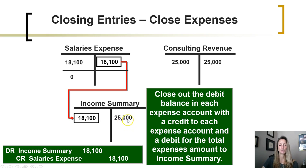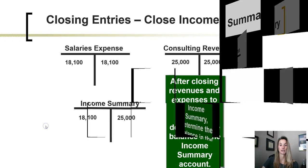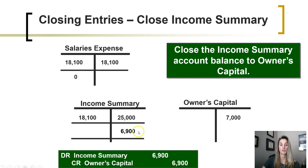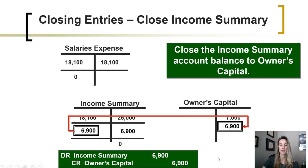Income summary is now summarizing the difference between the revenues for the period and the expenses for the period. After we do that, income summary is left with a credit balance of 6,900, which represents the amount of net income for the period. That net income has been summarized in income summary, and we are now ready to make the final transfer of income into owner's capital. So our third closing entry will debit income summary for its balance of 6,900 and credit the owner's capital account for 6,900, transferring the amount of net income and increasing owner's capital by that amount.